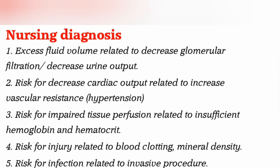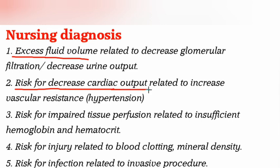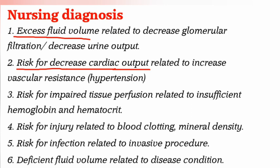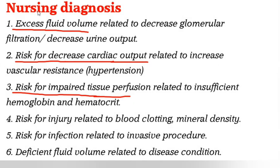Diagnosis 1: Excess fluid volume related to decreased glomerular filtration or decreased urine output. Diagnosis 2: Risk for decreased cardiac output related to increased vascular resistance. Diagnosis 3: Risk for impaired tissue perfusion related to insufficient hemoglobin and hematocrit. Diagnosis 4: Risk for injury related to blood clotting and mineral density.